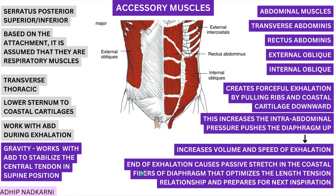At the end of exhalation, when all the air is out and the ribs are down, this creates a stretch on the costal fibers of the diaphragm. When this stretch is created, the diaphragm is at an optimum length-tension relationship — meaning the muscles of the diaphragm are at a length at which they can contract very well and create inhalation. So end of exhalation causes a passive stretch at the costal fibers of the diaphragm that optimizes the length-tension relationship and prepares for the next inspiration.